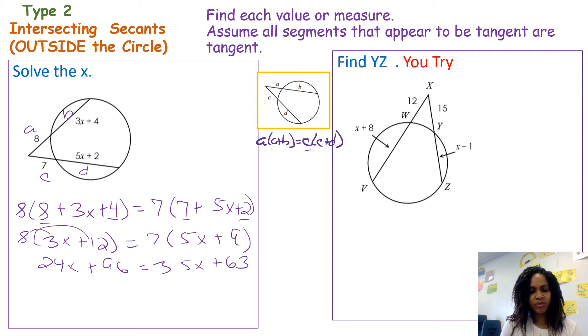I am subtracting 24 from both sides. 35 minus 24 will give me 11x, bringing down this 96. I'm going to subtract 63 from both sides, so it will cancel out on my left-hand side. 96 minus 63 is 33, so 33 equals 11x, dividing by 11. X equals 3. I just had to find x, so x equals 3.